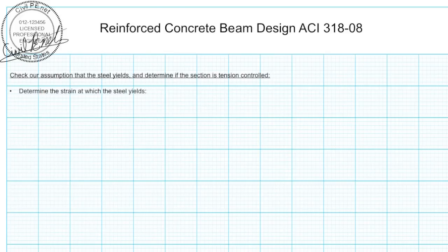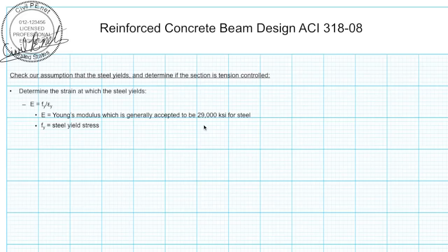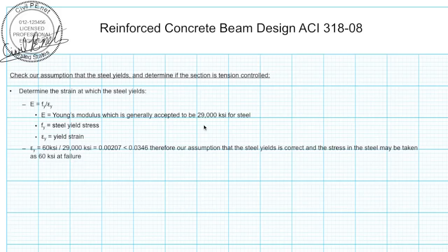First we're going to determine the strain at which the steel yields. Young's modulus is equal to the stress in the steel divided by the strain in the steel. For the state at which steel yields, we know that the stress is 60 KSI. Young's modulus is generally taken as 29,000 KSI for steel. F sub Y is the steel yield stress and epsilon sub Y is the steel yield strain. Substituting everything we know, we get the yield strain of steel equal to 60 KSI divided by 29,000 KSI, which is 0.00207.